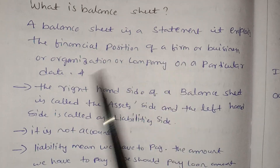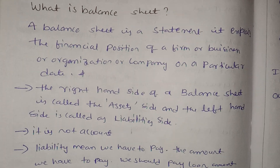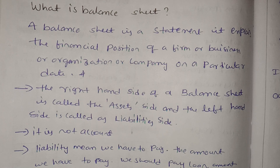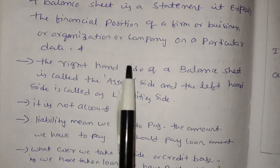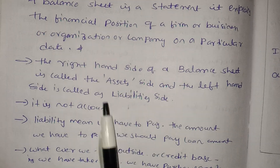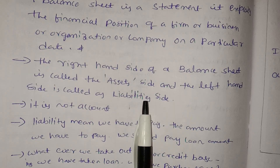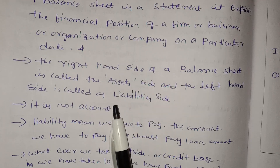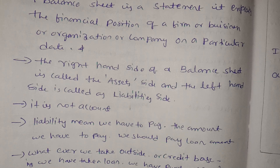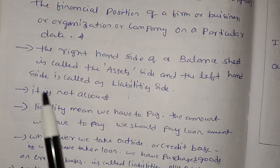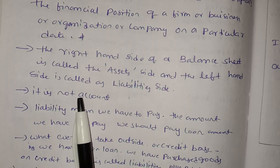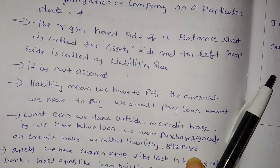Balance sheet is a statement — it is not an account. The balance sheet is balanced: on the right side we have assets, and liabilities and assets are equal. It shows the financial position, including losses and profits.